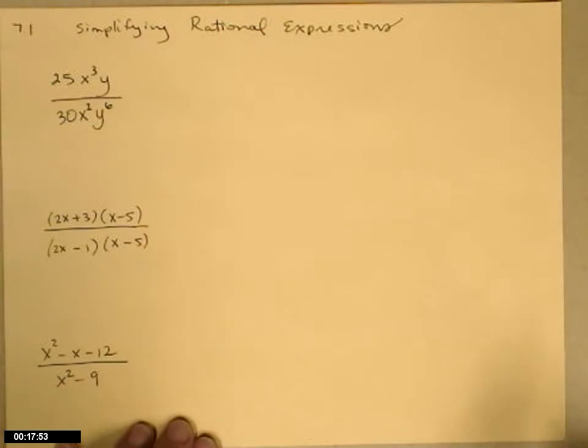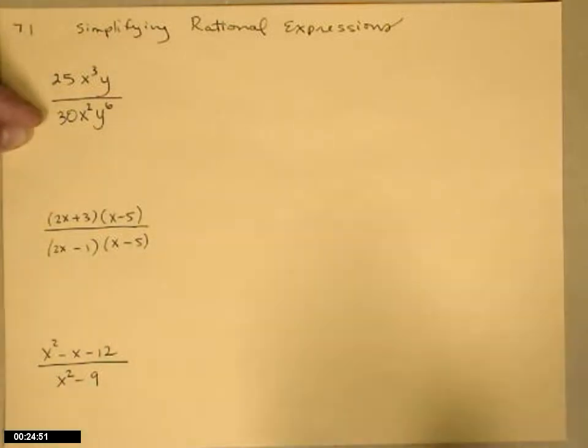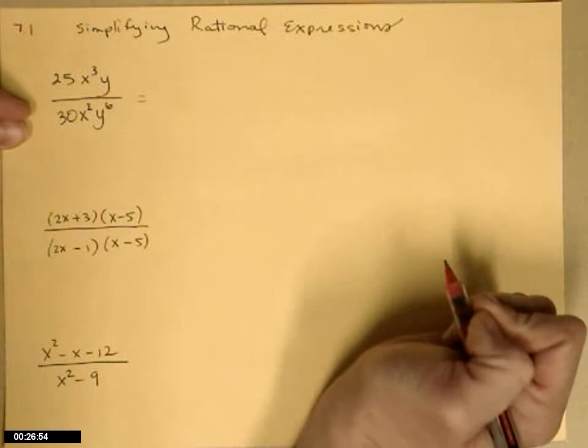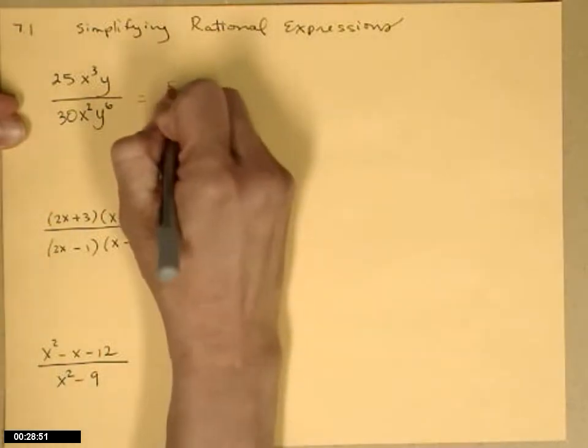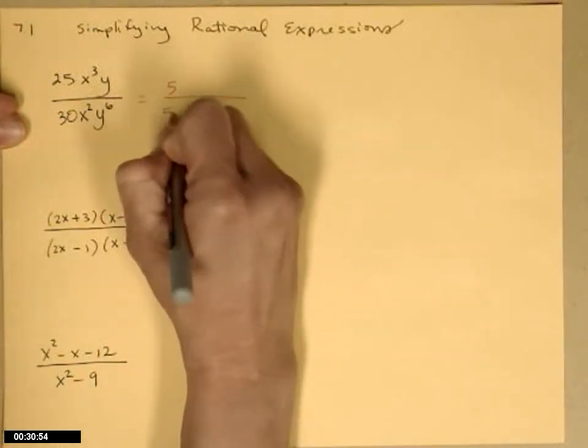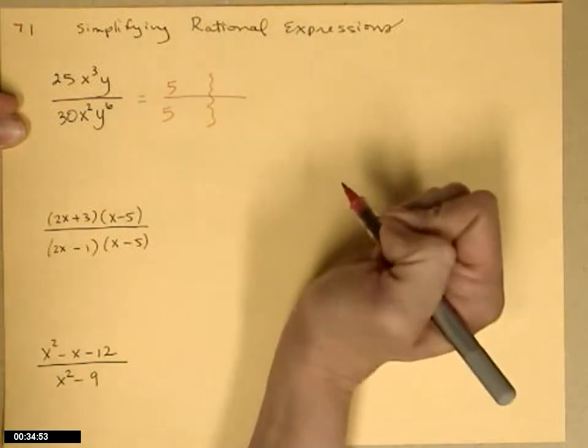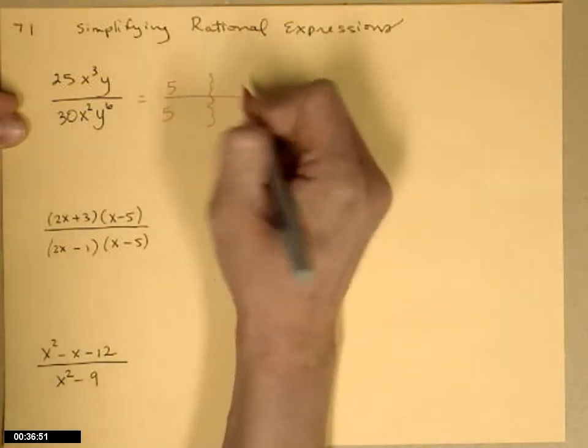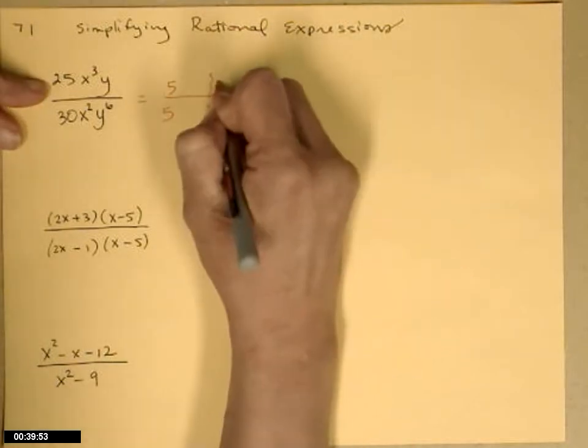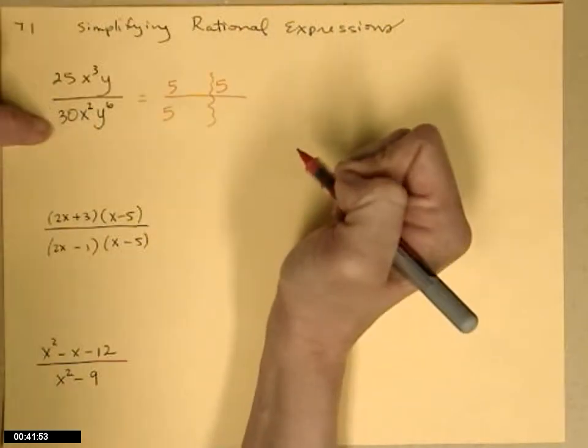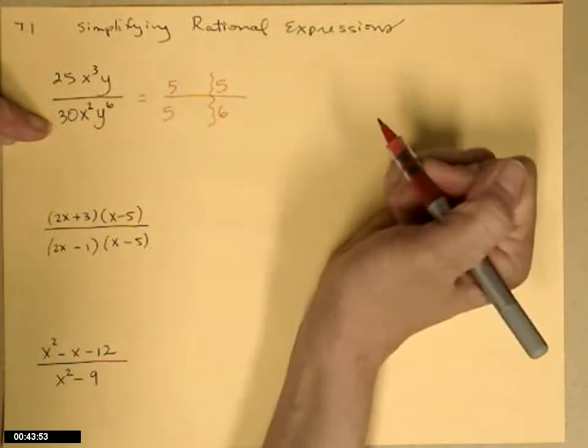So what you want to look for in this first example is something that goes into both 25 and 30. So I'm going to actually show this in gory detail here. So 5 goes into both of those, and then I'm going to have a separate place over on the other side of my squiggly line where I put those other factors. So for 25 it would be a 5, for 30 it would be a 6.